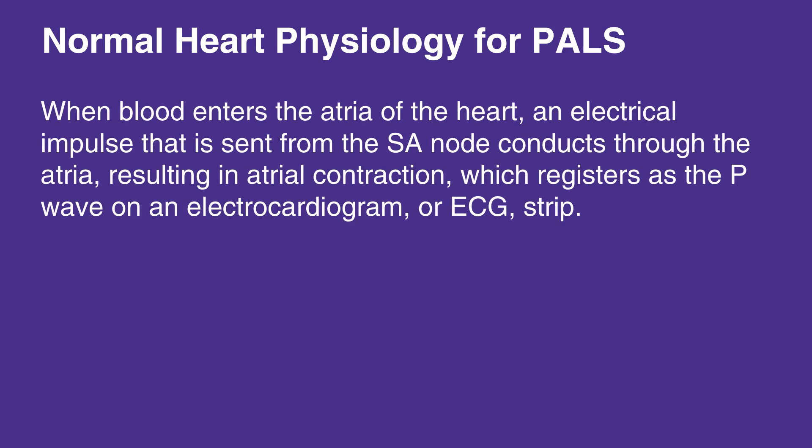When blood enters the atria of the heart, an electrical impulse sent from the SA node conducts through the atria, resulting in atrial contraction, which registers as the P wave on an electrocardiogram, or ECG, strip.